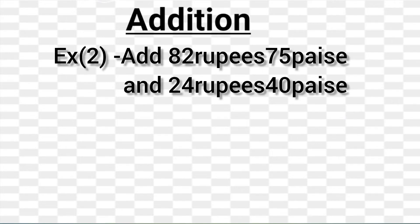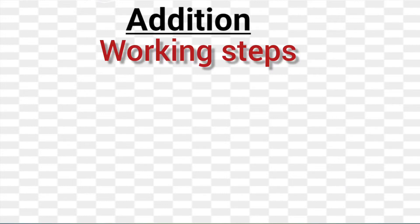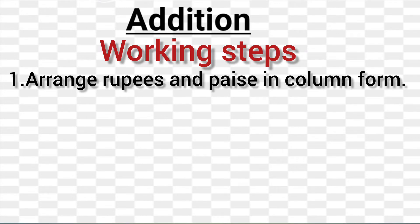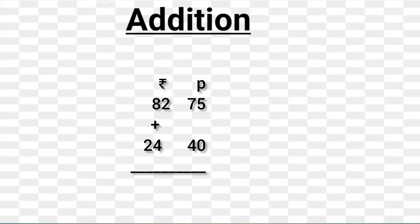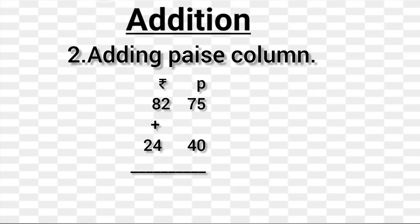Example 2: Add 82 rupees 75 paise and 24 rupees 40 paise. Let's follow the working steps to solve it. Step 1: Arrange rupees and paise in column form. Step 2: Adding the paise column — 75 paise plus 40 paise equals 115 paise.